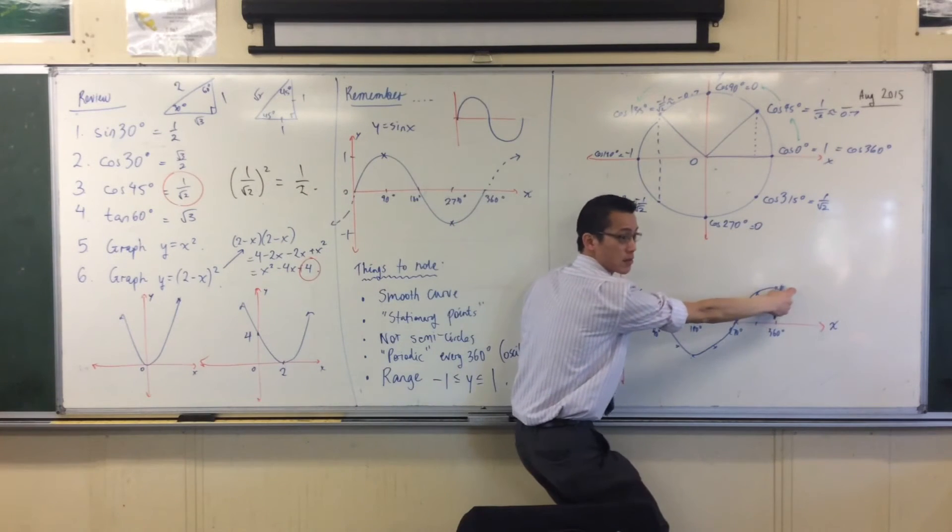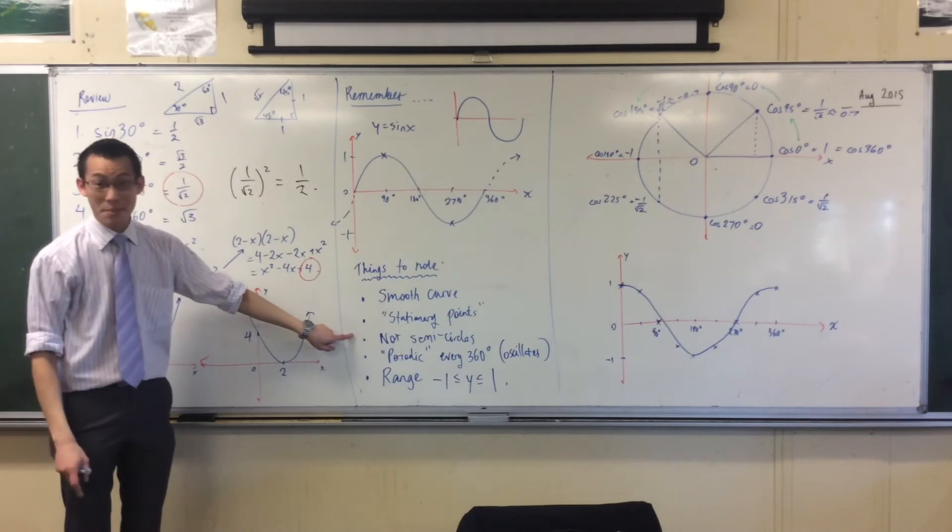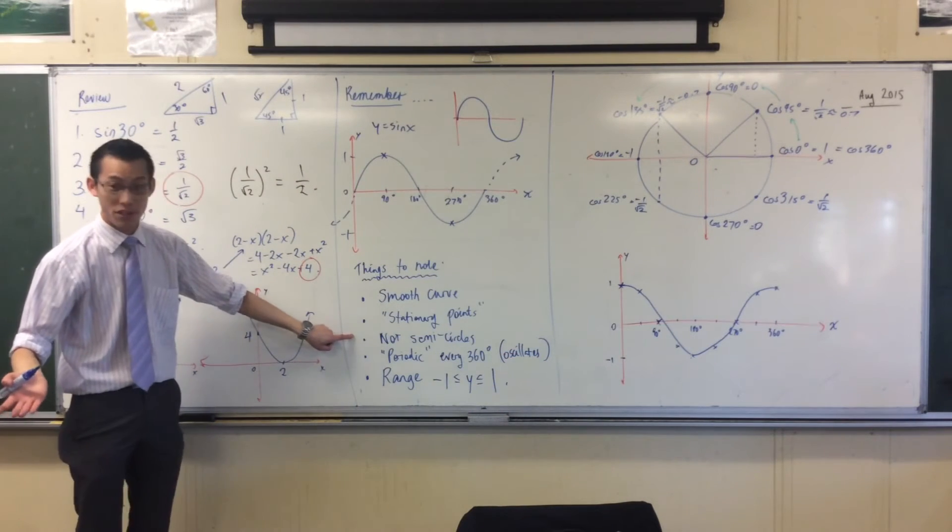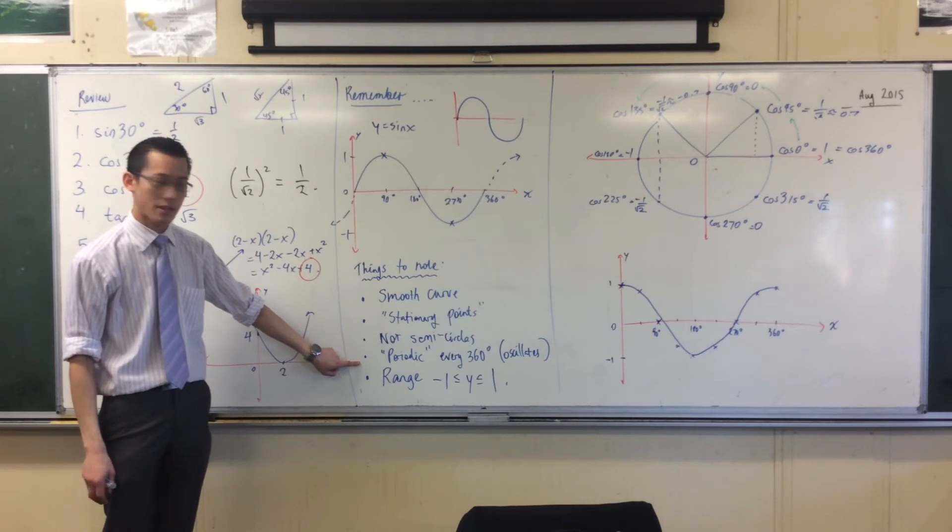They're not semicircles. Again, when you put points, you can see. It's still periodic every 360 degrees. It's going to repeat.